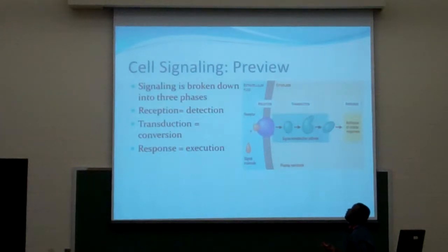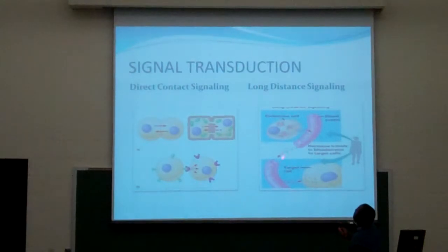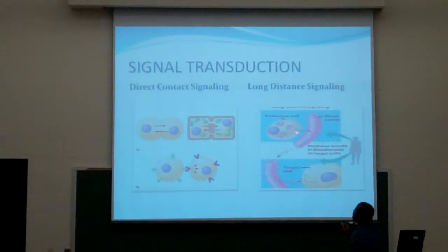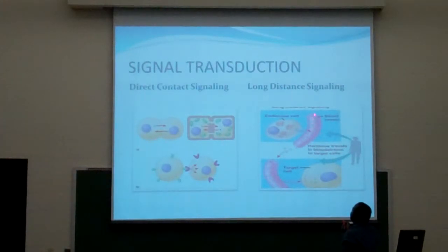Now, another type of cell signaling is where hormones are used to signal cells, because some cells are not close to each other. The glands release hormones into the circulatory system of the body, where they are then carried through the veins and capillaries.